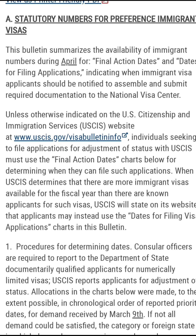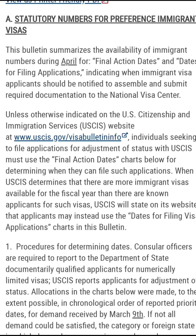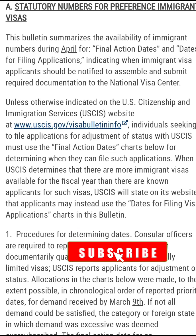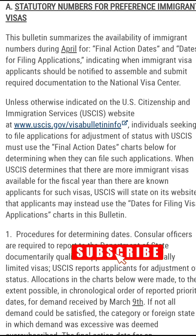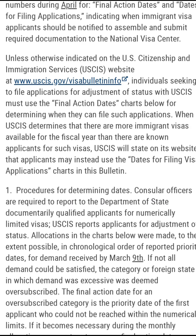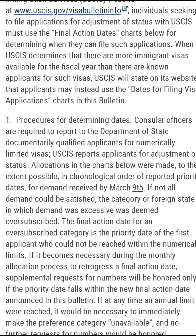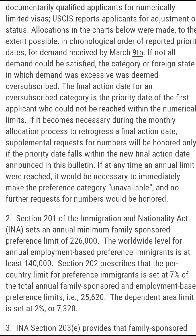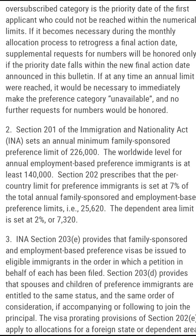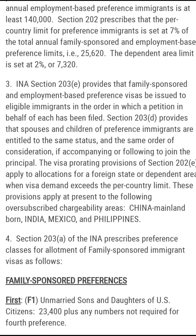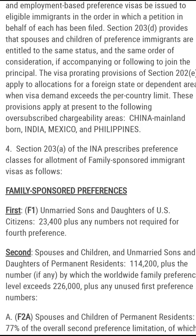The visa bulletin summarizes the availability of the immigrant visa numbers for each month, which covers the final action date and the date for filing applications with the National Visa Center, indicating when the immigrant visa applicant should be notified to assemble and submit required documentation. With this visibility, you are able to track how your case is being processed, starting from when it was approved from USCIS.